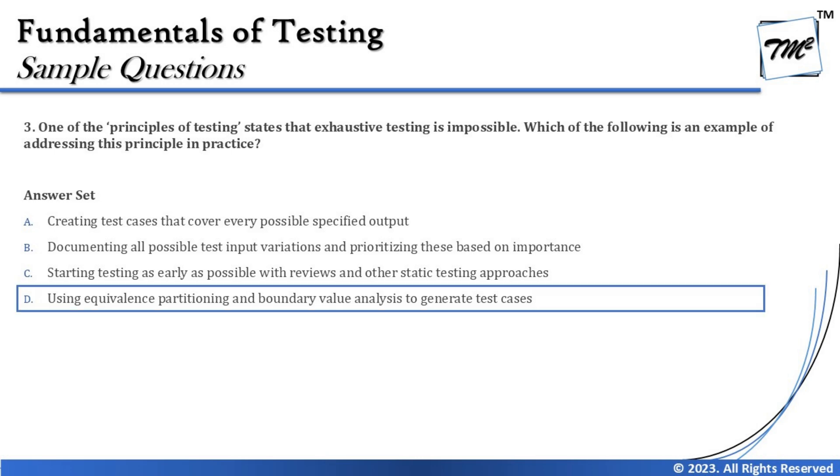The correct answer is D: using equivalence partitioning and boundary value analysis to generate test cases addresses the principle that exhaustive testing is impossible. A final piece of advice: don't come to sample paper discussions having only just completed one chapter — the exam blends topics from all six chapters. Read all six chapters first, then review these sample papers. Thanks for watching, keep learning and exploring, and happy learning!